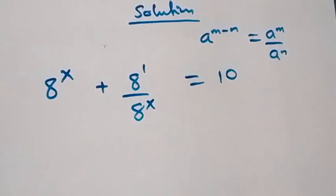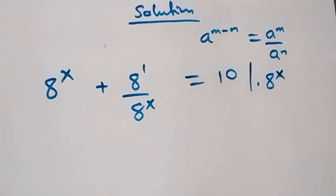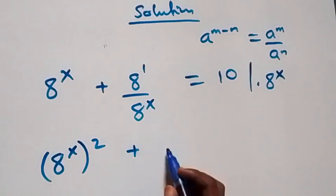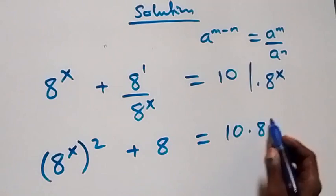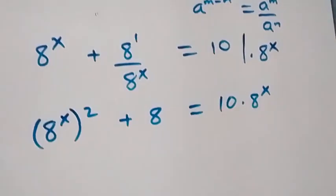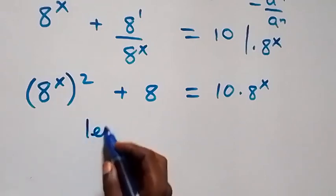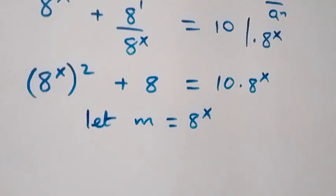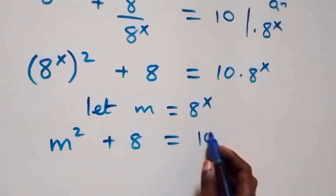From what we have now, we can multiply through by a raised to power x to clear this fraction. Then a raised to power x times a raised to power x becomes a raised to power x squared, then we have plus a raised to power x. Let a letter represent a raised to power x — so let m be equal to a raised to power x.